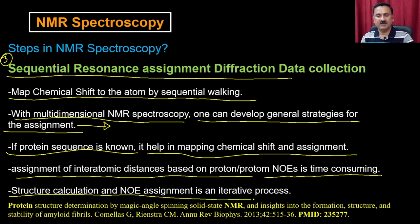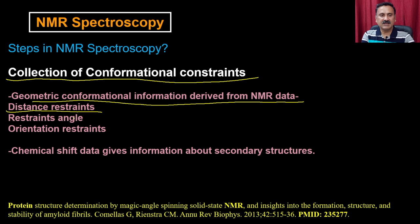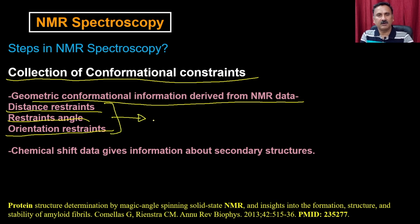Just like we were discussing about X-ray crystallography, the NMR structure solution is also iterative. You have to first assign the peaks — like nitrogen, ammonia, and so on. If that is correct, it is actually going to make the structure more reliable. That is how you are going to reduce the R factors. Then we have the fourth step, which is the collection of conformational constraints. The geometric conformational information derived from the NMR data includes distance restraints, dihedral angle restraints, and orientation restraints. All these are very important for seeing that the protein is structurally stable. You can also have the chemical shift data giving information about secondary structures.